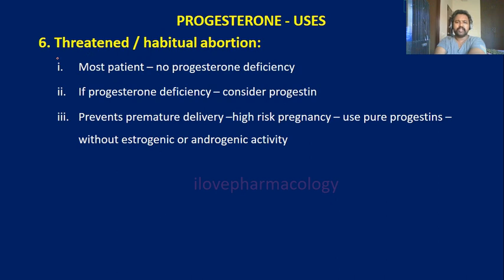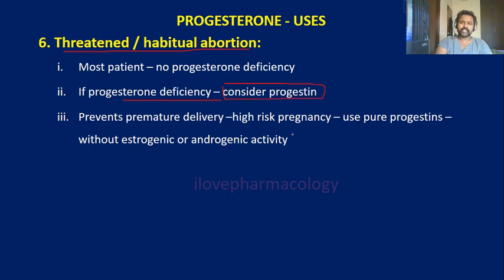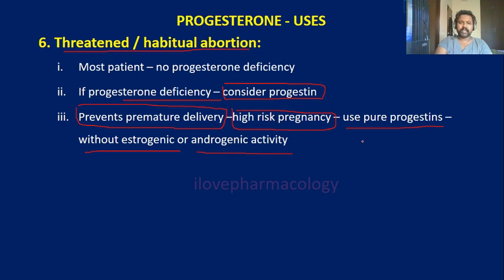The sixth use is that progesterone can be used in the treatment of threatened as well as habitual abortion. In most patients there is no deficiency of progesterone; only if there is a deficiency should progesterone be given. In high-risk pregnancies, progesterone can be given externally to prevent premature delivery. Pure progesterone without estrogenic or androgenic activity is preferred, as progesterone decreases the sensitivity of the myometrium to oxytocin, thereby reducing uterine contractions.